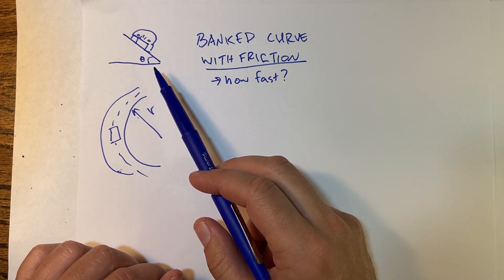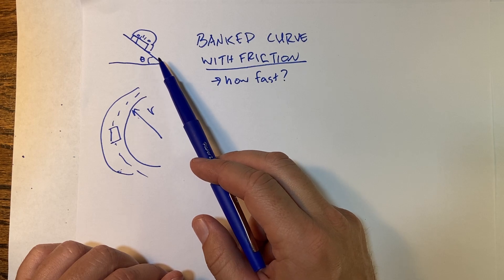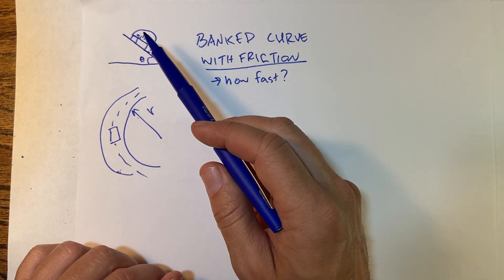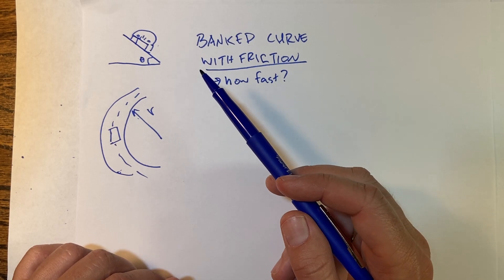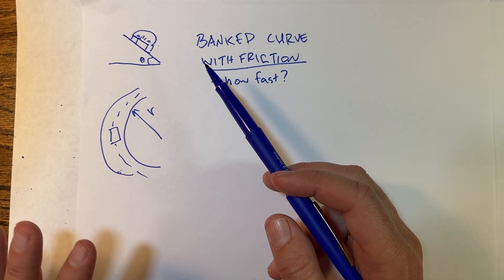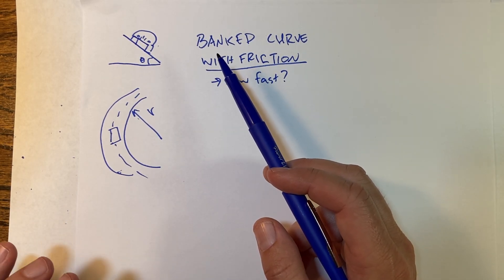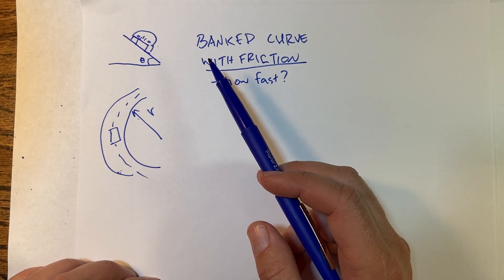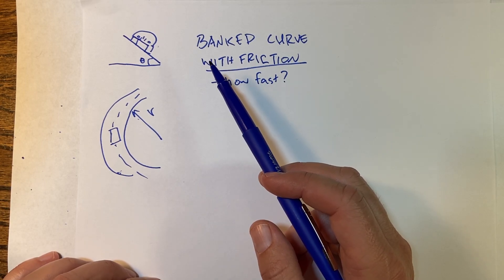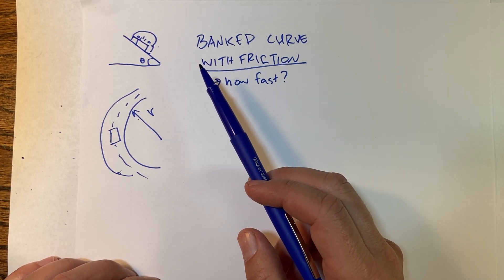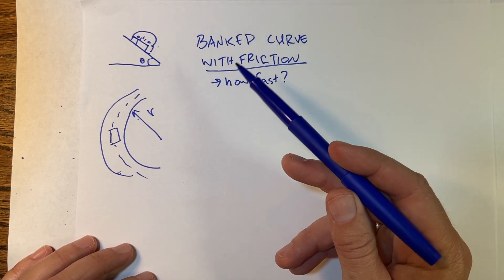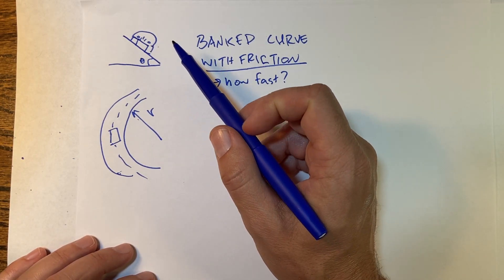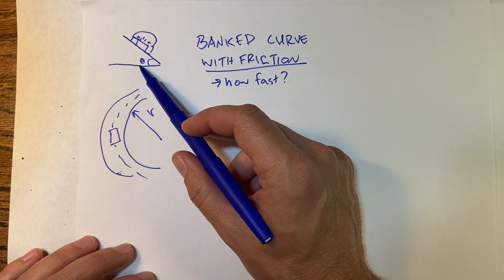In the last video I did a car going around a banked curve with no friction, but now what if there is indeed friction? I'm not going to put in numbers in this video because my next video after this is going to be playing around with calculations and changing all the numbers. So let's just parameterize this whole thing.